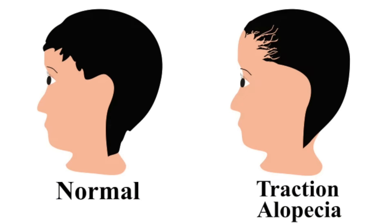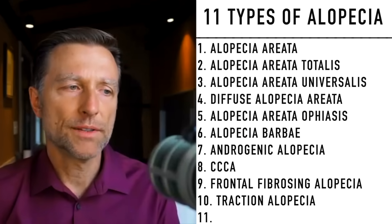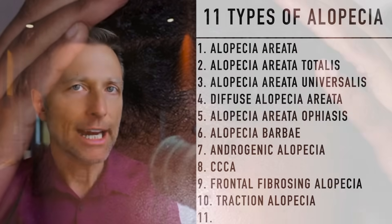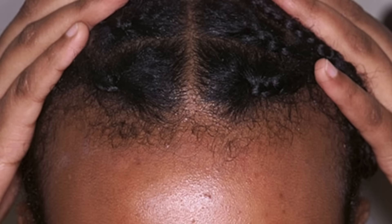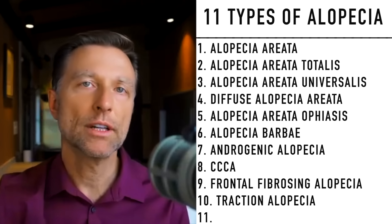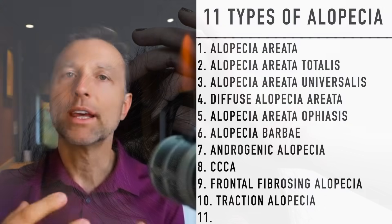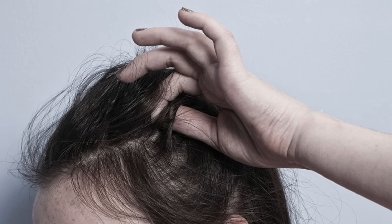The next one is called traction alopecia, which occurs because there's strain or stress on the hair roots. It usually occurs when people have very tight hairstyles — braids, dreadlocks, a ponytail, or even certain chemical relaxers that can weaken the hair. This constant traction actually pulls the hair right out of the scalp.